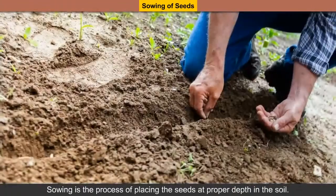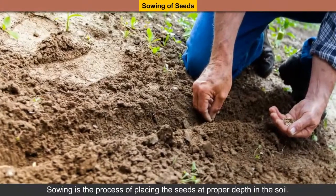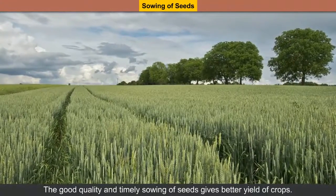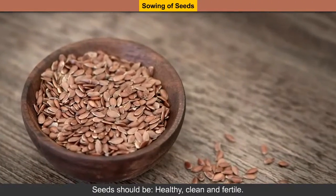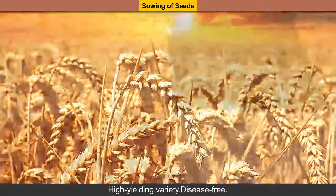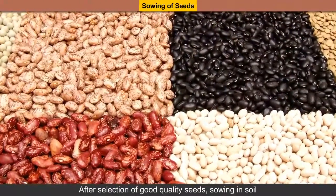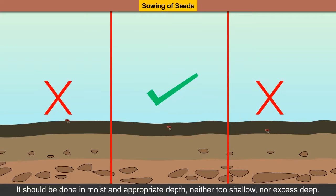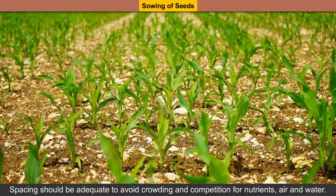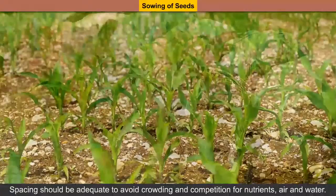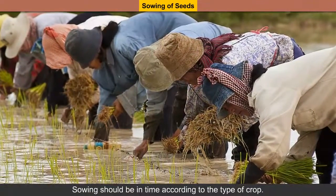Sowing of seeds: Sowing is the process of placing the seeds at proper depth in the soil. The good quality and timely sowing of seeds gives better yield of crops. Seeds should be healthy, clean and fertile, high yielding variety, and disease free. Sowing in soil should be done in moist conditions and at appropriate depth — neither too shallow nor too deep. Spacing should be adequate to avoid crowding and competition for nutrients, air and water. Sowing should be done in time according to the type of crop.